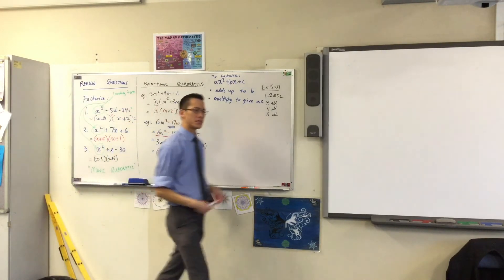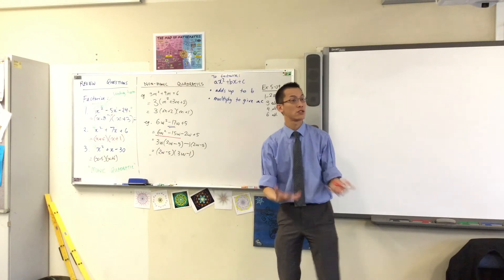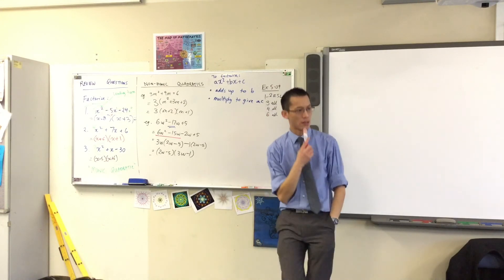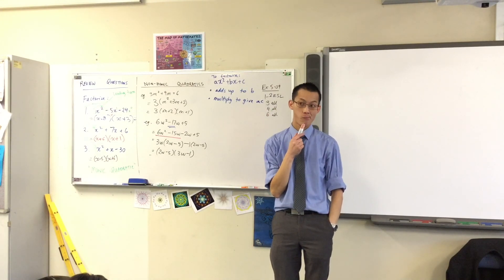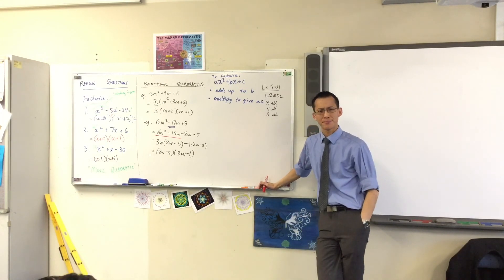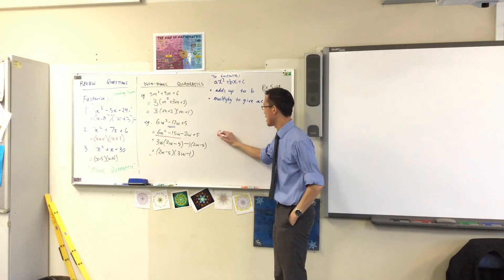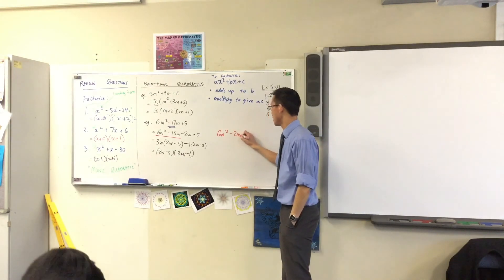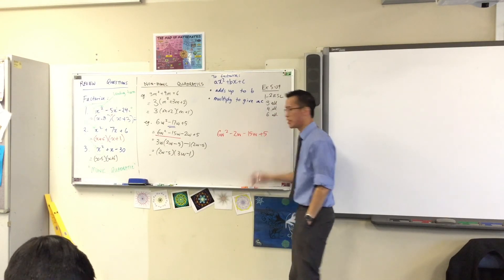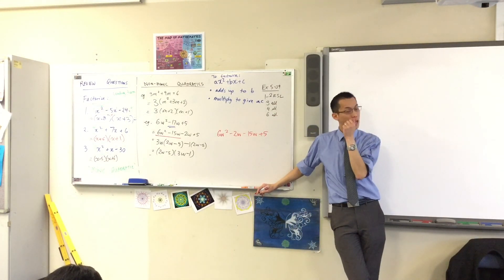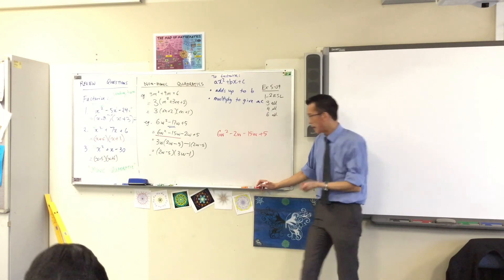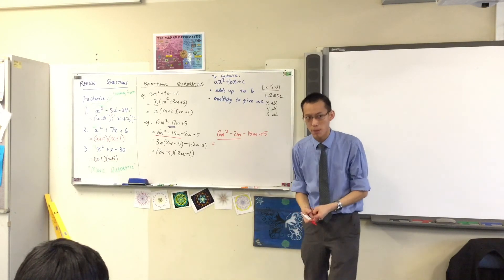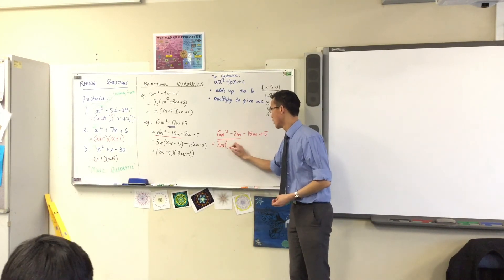Remember, we came up with our two numbers: minus 15W and minus 2W. I put minus 15 first and then minus 2 after. Does it matter which way we put them? Let's find out. If I wrote 6W squared and, just by chance, wrote them in the opposite order — swapping them around — can I still solve this?